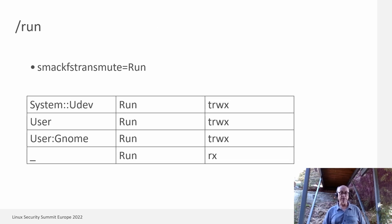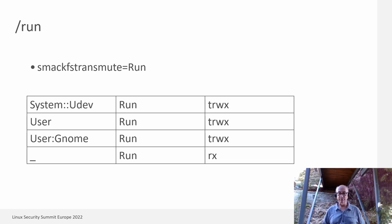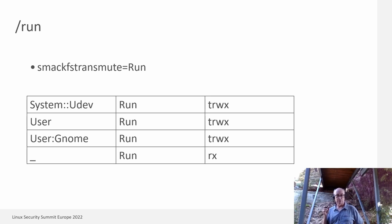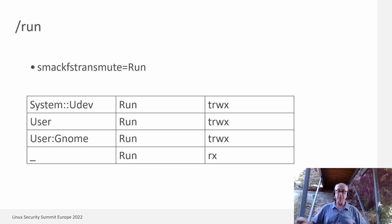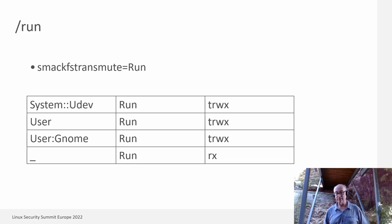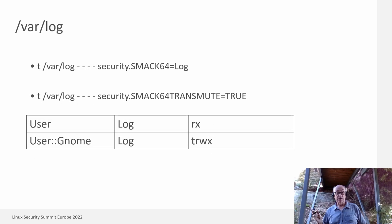We're going to mount /run with the transmute option, giving it the label 'run'. We'll give transmute read-write access to Udev, user, and user-gnome — and they'll all be able to share information in /run. It's an isolated place for an isolated purpose. You shouldn't just be looking at arbitrary data in /run; when you go to /run, you should be looking for specific things. That's going to solve a bunch of problems.